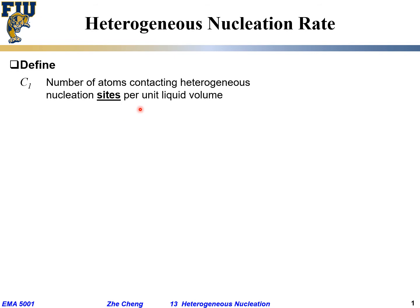The first one is the so-called site density. What is C1 defined as? We define it as the number of atoms, but the special atoms that are in contact with your special sites.